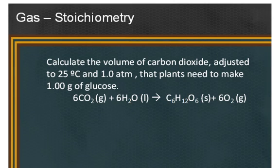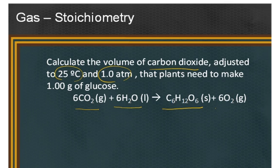Let's practice a gas stoichiometry problem. Here we go. Calculate the volume of carbon dioxide adjusted to 25 degrees Celsius and 1 atmosphere that plants need to make 1 gram of glucose. Here is the balanced chemical equation: 6 moles of carbon dioxide will react with 6 moles of water to produce 1 mole of glucose and 6 moles of oxygen. This is the classic photosynthesis reaction.